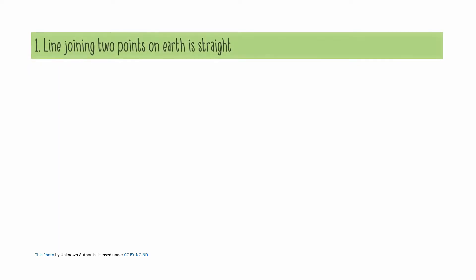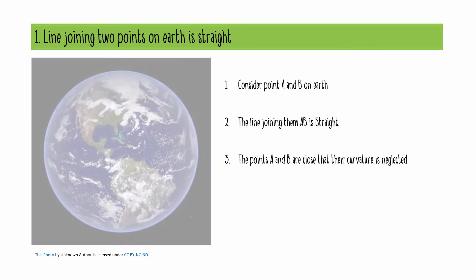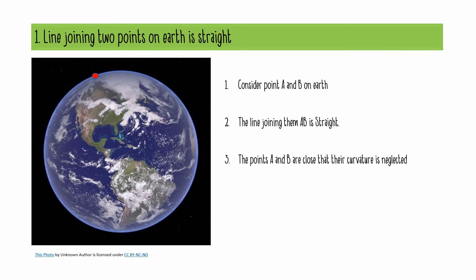The line joining two points on the Earth is straight. This can be understood by the illustration. Consider point A and B on Earth. Let the points be joined by means of a line. The closer the line, the less is the curvature shown by the line. So it is a straight line as said by the plane surveying principle.